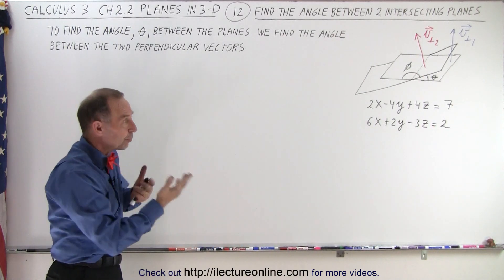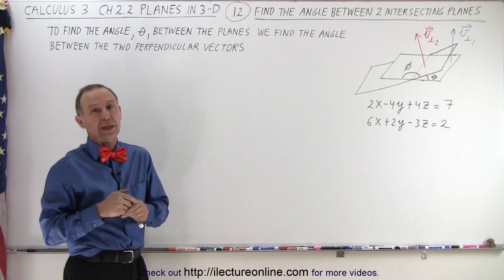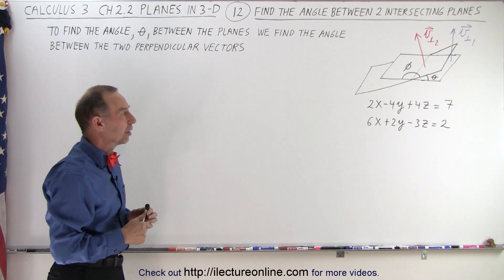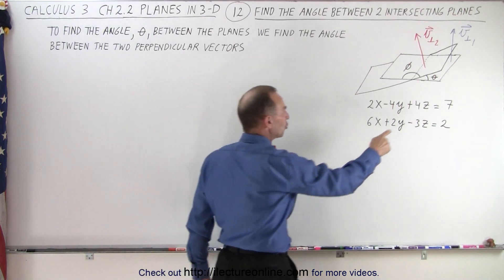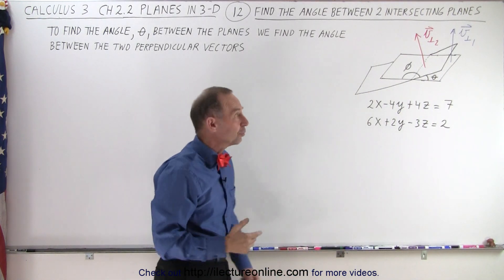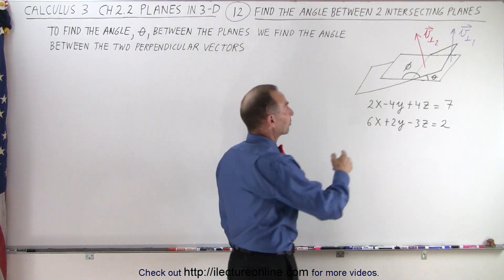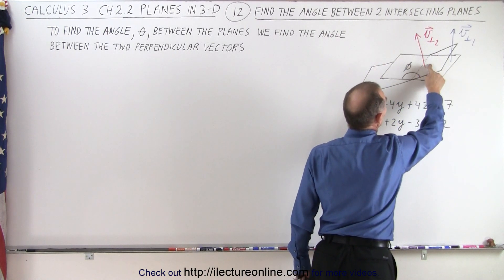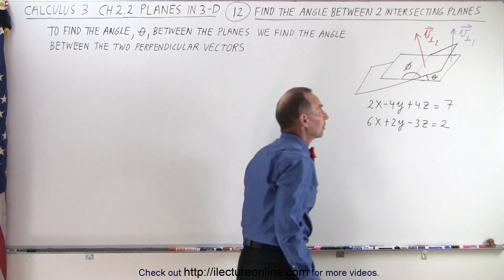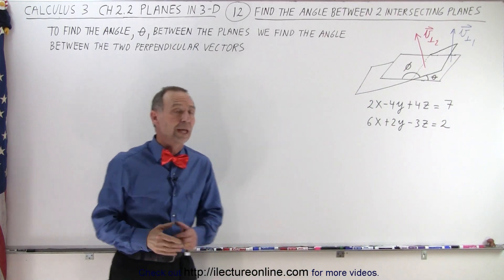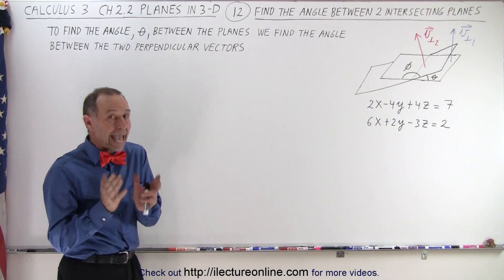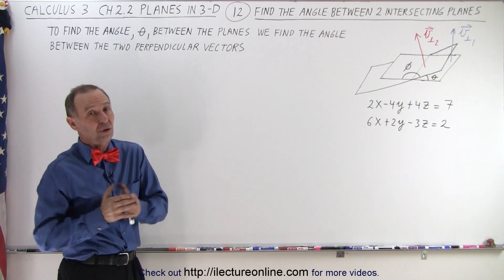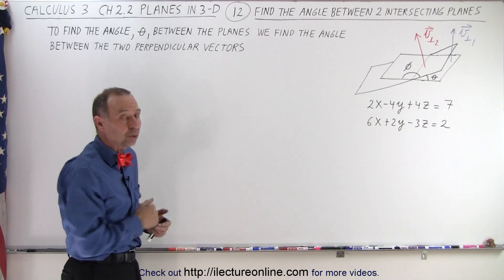If by chance through the process we find phi, we can subtract phi from 180 degrees to find theta. Now notice we have a red vector that is the perpendicular vector to the second plane, and the blue vector is the perpendicular vector to the first plane. The angle between those two vectors will equal the angle between the planes, so all we have to do is find the angle between the two vectors.